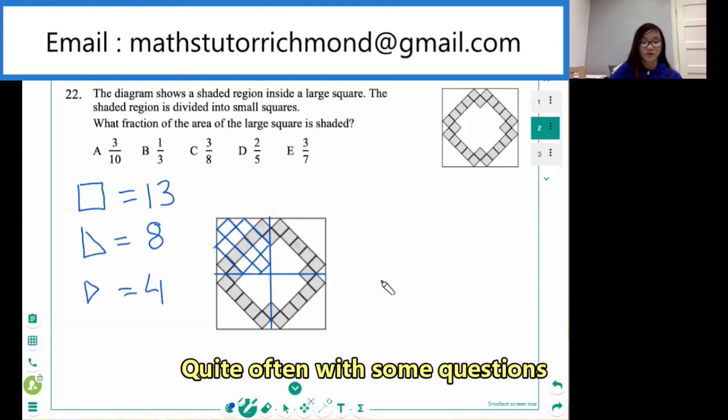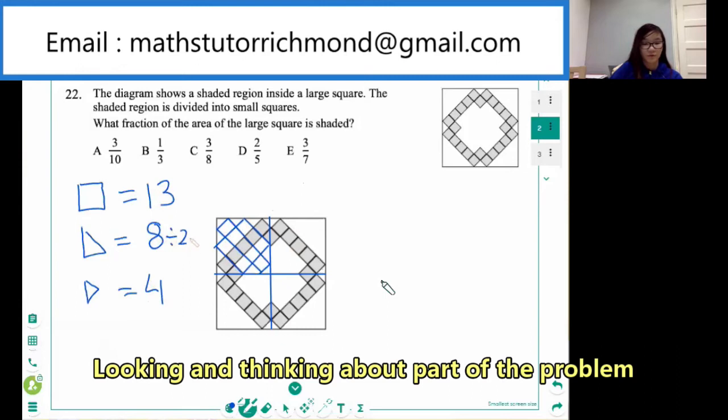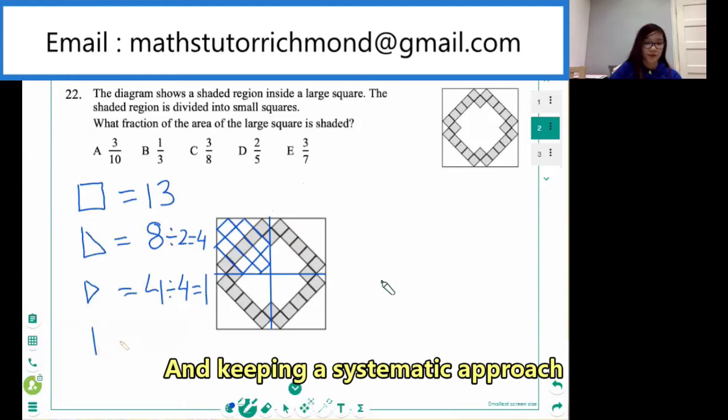So in total, the quarter of the square has, so eight divided by two is equal to four, and this four divided by four is equal to one. So it would be 13 plus four plus one, which is equal to 18.